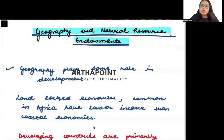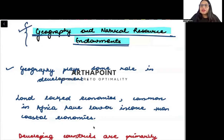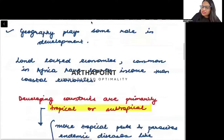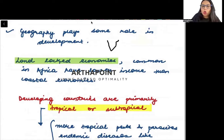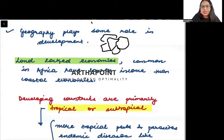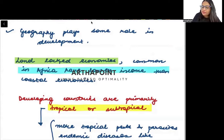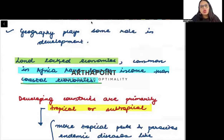Geography and Natural Resource Endowment. Let us talk about how geography or the endowment of natural resources affects whether a country will be developing or developed. Landlocked economies — those locked by land from everywhere with no water accessible — are common in Africa and have lower income compared to coastal economies, which have access to water.